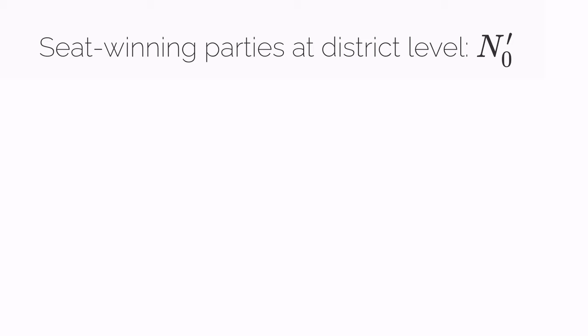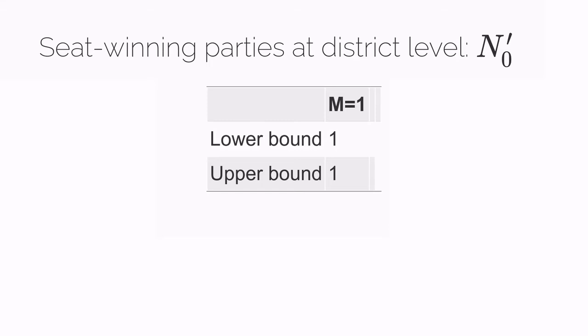If our district has a magnitude of one, then the smallest number of parties that can win a seat is just one. We can't have zero seat winning parties. Similarly, we can't have more parties win seats than there are seats available. And so the largest number of seat winning parties is also one.